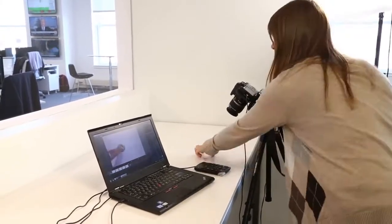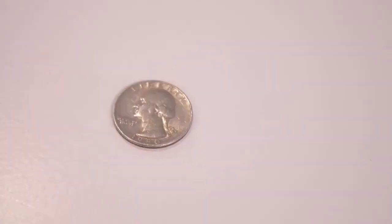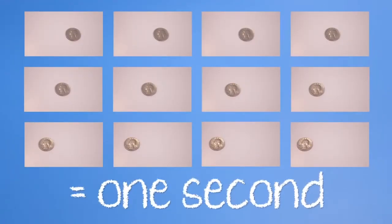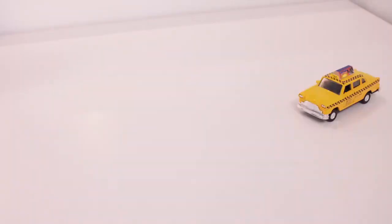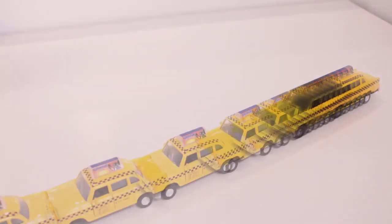When you string these images together, the object appears to move. Typically, 12 frames create one second of stop motion animation. By varying the amount you change the object between frames, you can make it appear to move slower or faster. This is the most basic principle of animation.